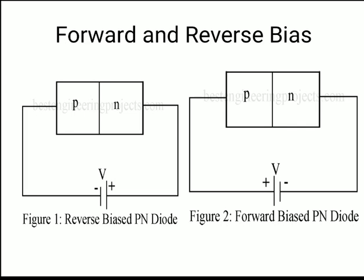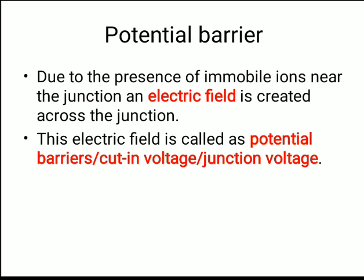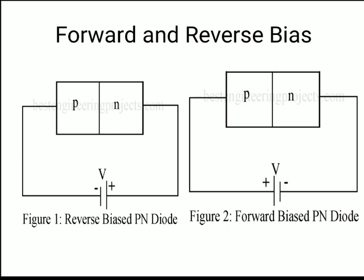Let's start with the next topic: forward and reverse bias. In the last lecture, we completed the potential barrier. We saw what is meant by p-type semiconductor, n-type semiconductor, p-n junction, diffusion, the depletion layer, and barrier potential. Now let us see what is meant by forward and reverse bias.